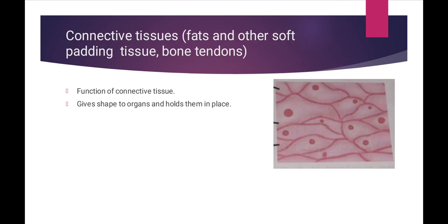Third is connective tissue, found in fats and other soft padding tissue, bone, and tendons. Yeh woh tissues hote hain jo hamaari narm jagahon aur soft tissues mein paaye jaate hain. The function of connective tissue is to give shape to organs and hold them in place – yaani yeh hamare organs ko shape mein aur ek jagah rakhne mein madad karte hain.